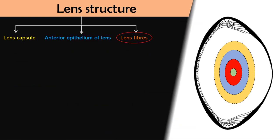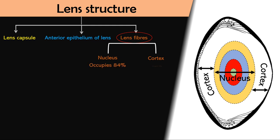Next part of lens is lens fibers which are of two types and can be divided into two types. Central one is nucleus and the peripheral is cortex, in which nucleus occupies major part of the lens about 84% and cortex occupies about 16%. Nucleus is metabolically inactive because nucleus has the oldest fibers formed earliest.